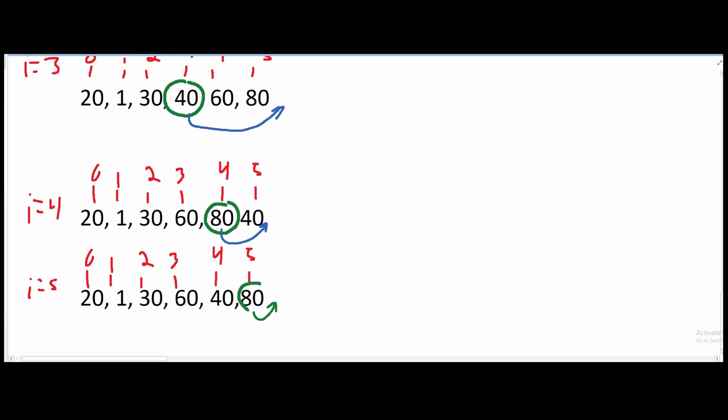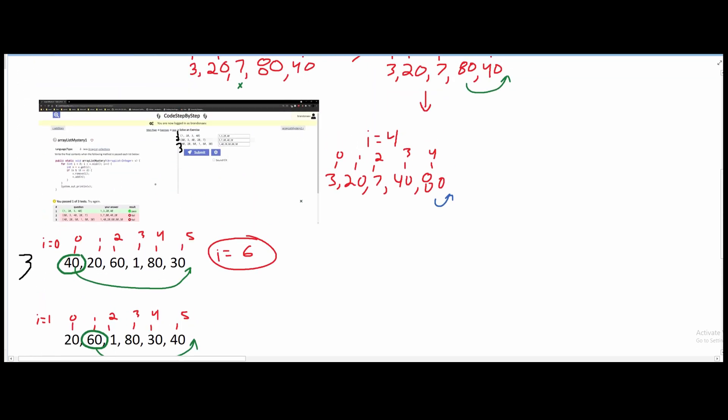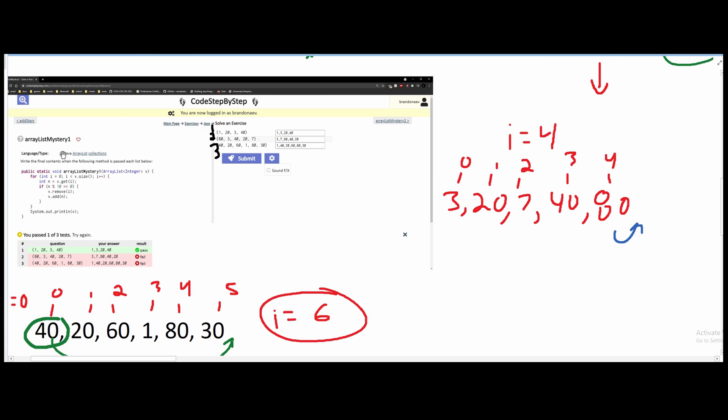And index 5 is 80, which is going to be removed and then added back in. And that is the answer for array list mystery 1.